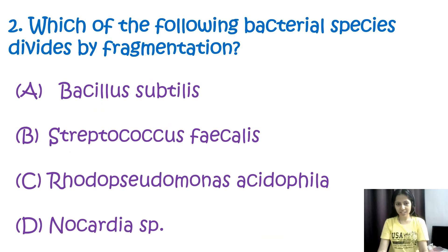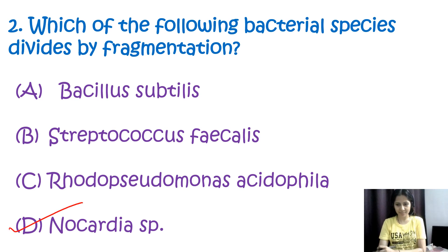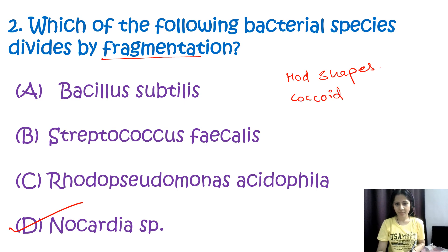Question number two: which of the following bacterial species divides by fragmentation? Options are Bacillus subtilis, Streptococcus faecalis, Rhodopseudomonas acidophila, or Nocardia. The correct option is D, Nocardia species. Nocardia is known to reproduce by fragmentation, where filamentous cells break into smaller rod-shaped or coccoid cells, each of which can grow into a new organism.